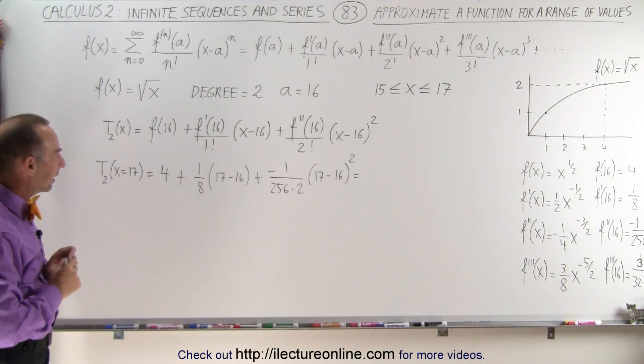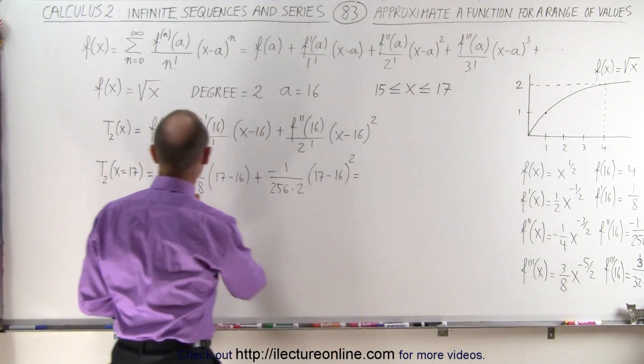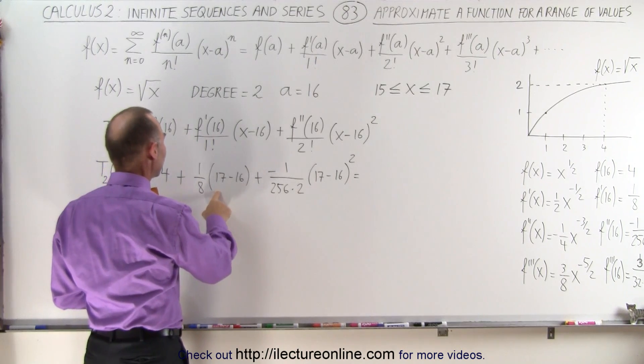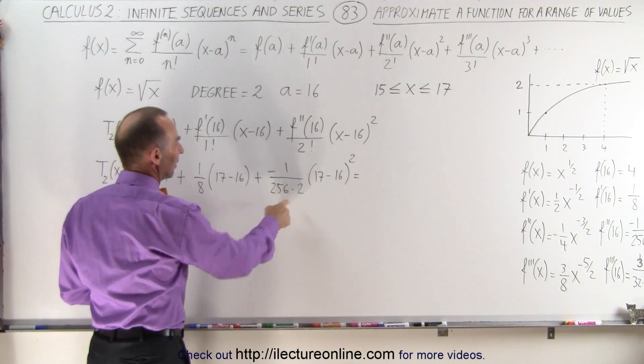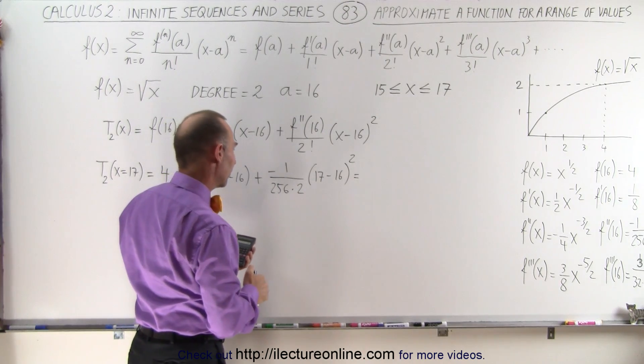Now let's evaluate this. I need a calculator for that. So we have 4 plus 1/8, that's 4.125 minus this, because we have a minus in here. So let's go ahead and do that.